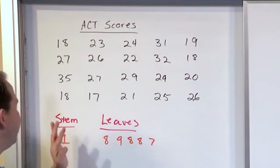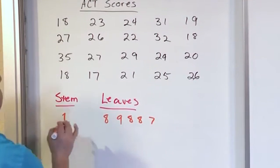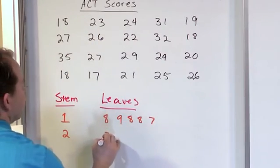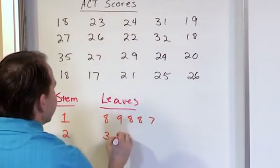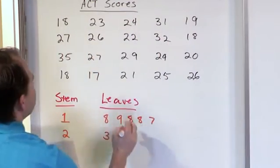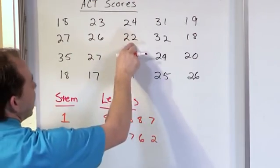Then I go and look at a new stem that begins with a number 2, and I see I have a 23 here. So I put a 3 here. I have a 24 here, so I put a 4 here. I don't have any more here, but I have a 27, so a 7 goes here. 26, so a 6 goes here. A 22, so that goes here.